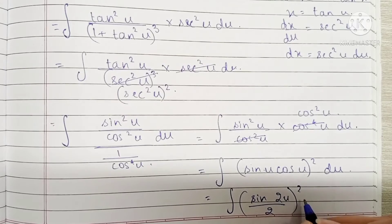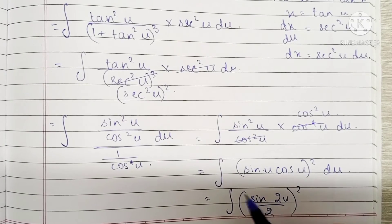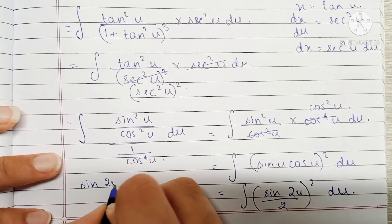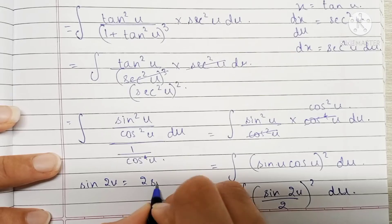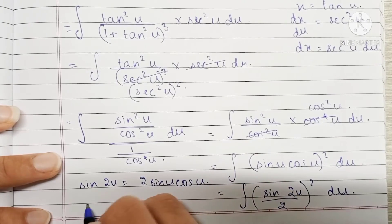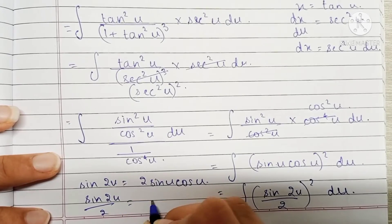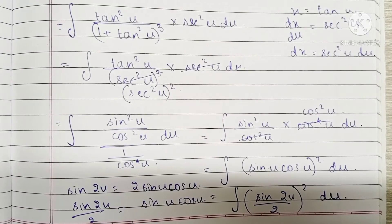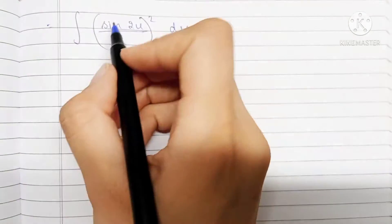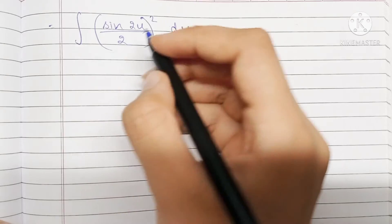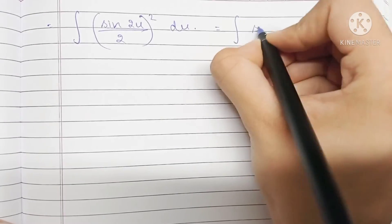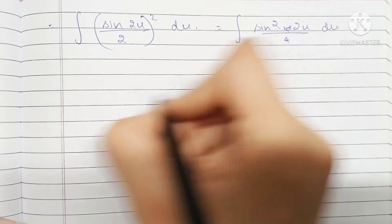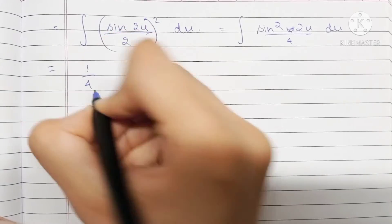We can observe that sin²u · cos²u can be written as (sin u · cos u)², and this can also be written as the integral of (sin 2u / 2) the whole squared, because sin 2u equals 2 sin u cos u, so sin 2u / 2 equals sin u cos u. So now we have the integral of sin²(2u) upon 4, and we can take 1/4 outside as a constant.